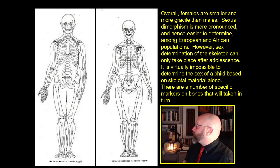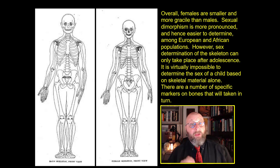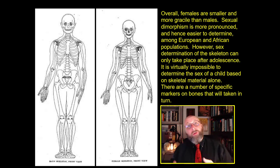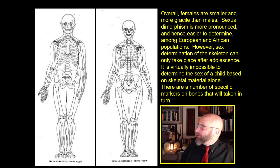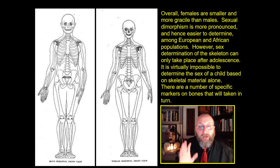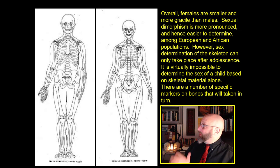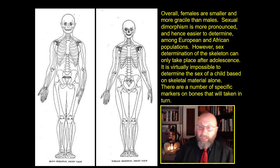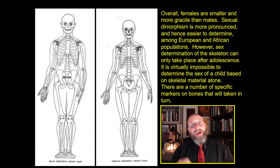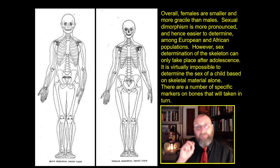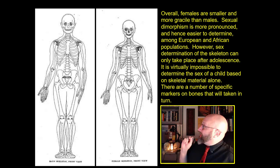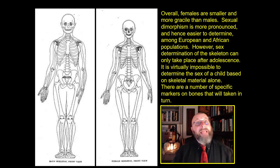Here are both individuals reduced to skeletal elements. Overall, female humans are much smaller and more gracile than their male counterparts. Sexual dimorphism is more pronounced and hence easier to determine among European and African populations than among Asian populations. However, sexual determination of the skeleton can really only take place after adolescence - it is very, very difficult to determine the biological sex of individuals prior to adolescence, especially based on skeletal material alone.